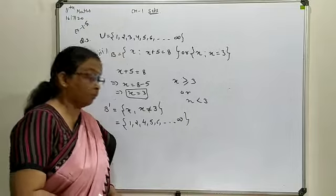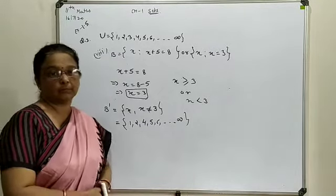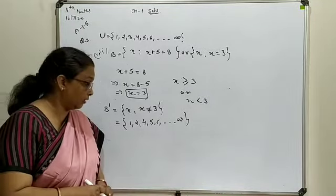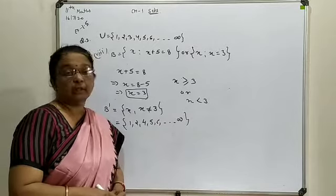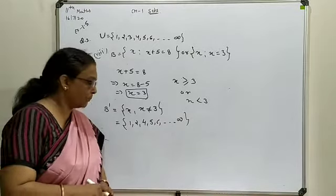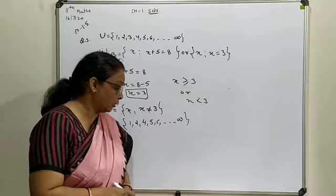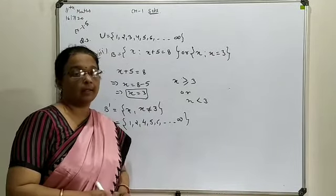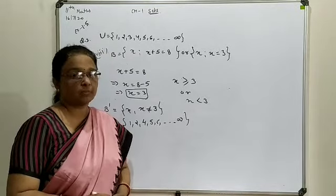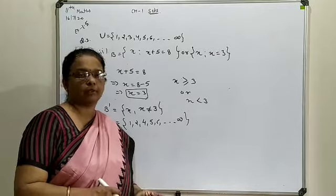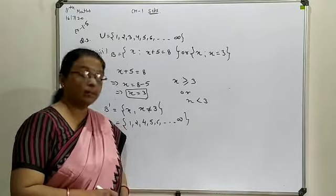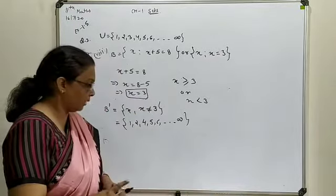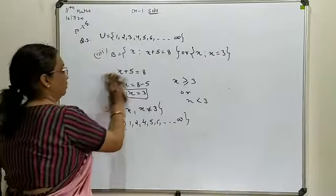While discussing properties of the complement, one law we covered was De Morgan's Law. In question number 4, you have to verify 2 statements for De Morgan's Law. For that purpose, three sets are available: one universal set, set A, and set B. On the basis of these three, we are going to verify De Morgan's Law. Both statements are given, and we will verify one of them.